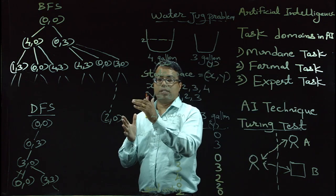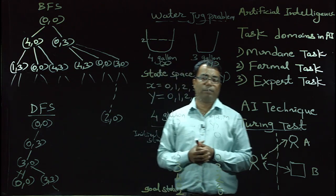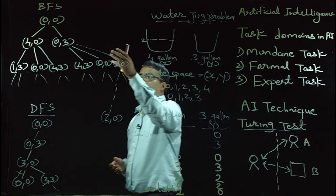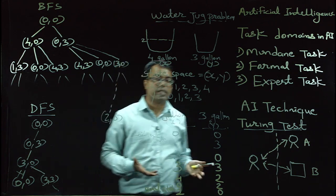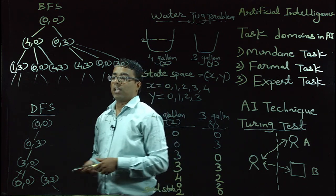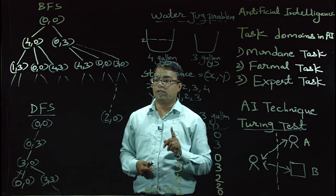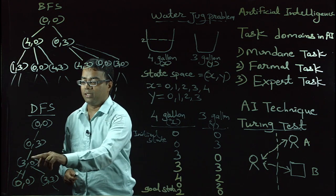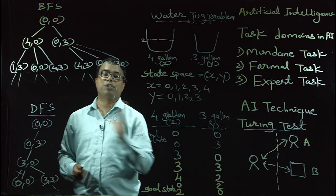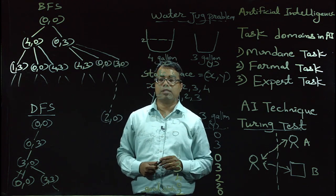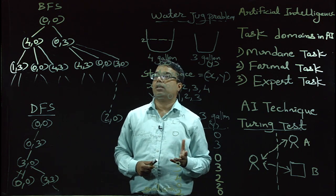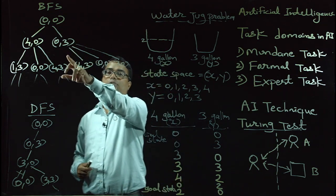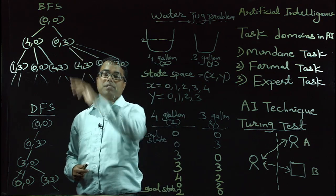Both BFS and DFS may be used by an AI system to solve simple problems like the water jug problem. Both techniques have advantages and disadvantages. The first advantage of DFS is it requires less memory, because only the single branch of the tree generated is stored in memory. In contrast, in BFS, all the tree generated so far has to be stored in memory — hence BFS requires more memory, which is a disadvantage of BFS.